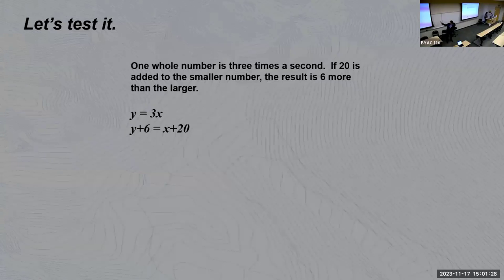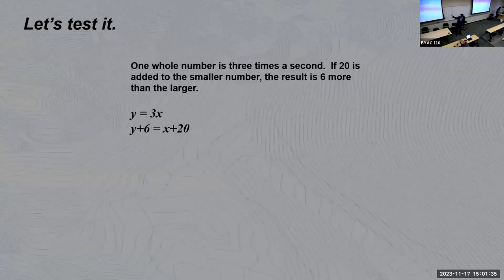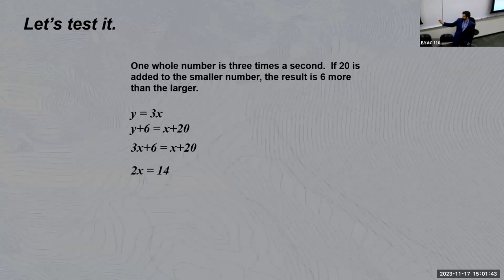First, just to give an example, if we have a sample word problem here: one number is three times the second, 20 is added to the smaller number, the result is six more than the larger. We can set it up with this system of equations, y = 3x, y+6 = x+20, and then we just do some algebra. We get 2x equals 14, and x equals 7, and 21 is the end.